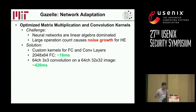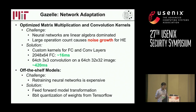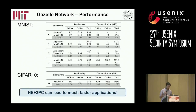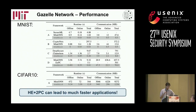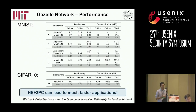In conclusion, Gazelle uses efficient linear algebra kernels key to much of the speedup, and because we can patch these layers with nonlinear layers without changing the nonlinearity, we can use off-the-shelf models with simple feedforward transformation. Gazelle is roughly 20 to 30 times faster than state-of-the-art techniques for these tasks, and we can save maybe 10 to 100 times on bandwidth. If you take away one thing from this talk, it should be that using both homomorphic encryption and two-party computation together can lead to much faster applications. Thank you.